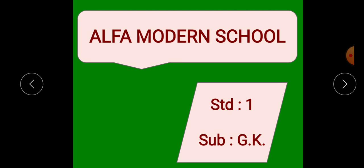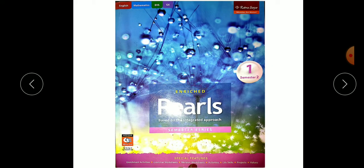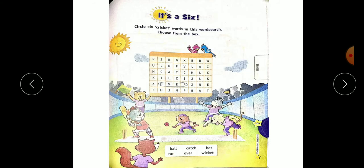Hello students, how are you? This is your Pulse Textbook Semester 2. Now, open your GK section. Lesson name is It's a 6. Page number 209. Circle 6 cricket words in this word search. Choose from the box.